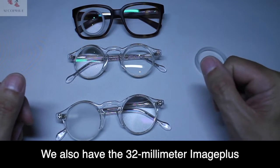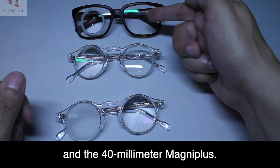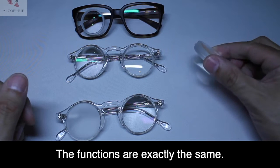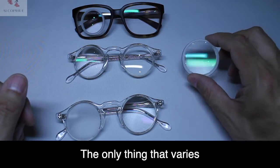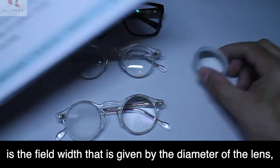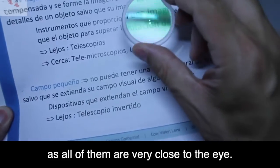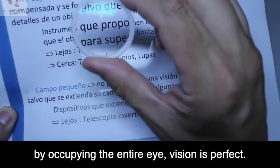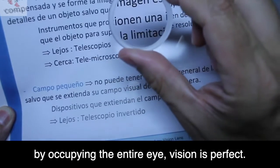We also have the 32mm ImagePlus and 40mm MagniPlus. The functions are exactly the same. The only difference is the field width, which is determined by the lens diameter. As all of them are very close to the eye and occupy the entire eye, vision is perfect.